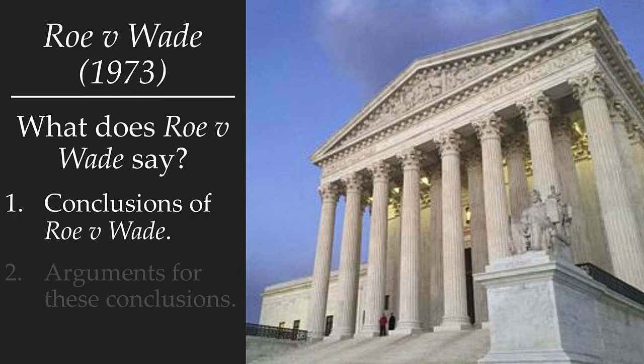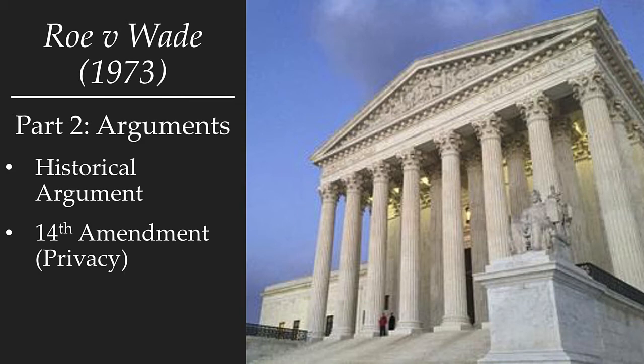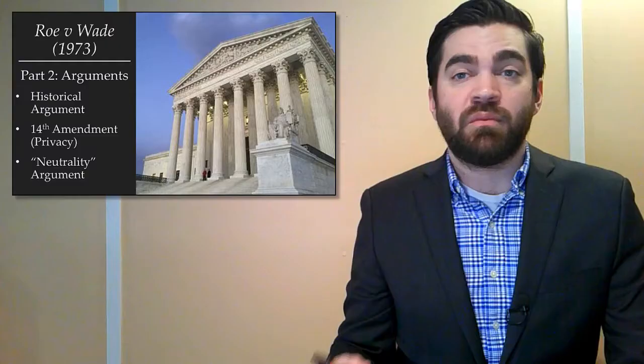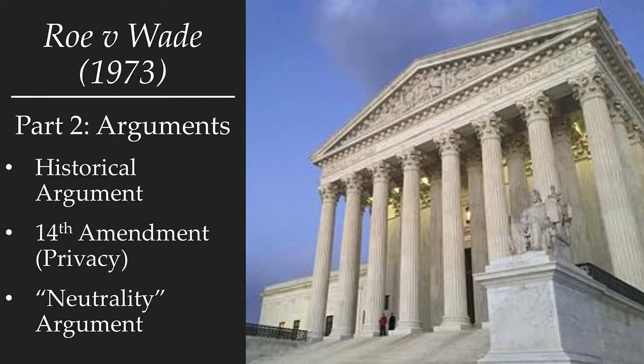In the second part of the video we're going to look at some of the arguments or justifications that the court gave on behalf of its conclusions. There are going to be three major arguments found in Roe v. Wade: the historical argument regarding abortion, an argument based on the 14th Amendment and the right to privacy, and third an argument from the neutrality of the law. I'm going to describe these arguments and also describe some criticisms that have been raised against them.